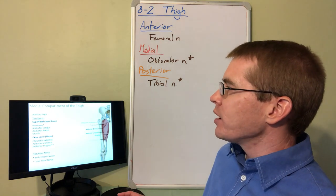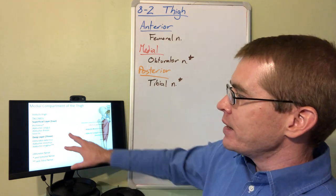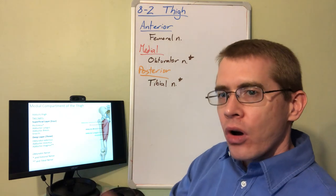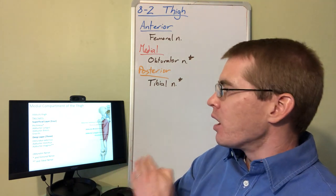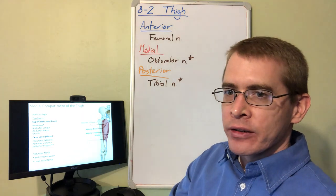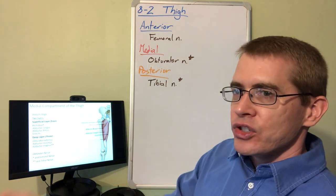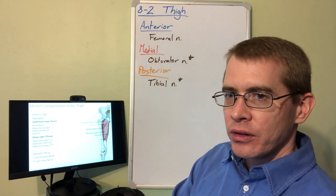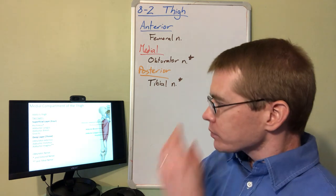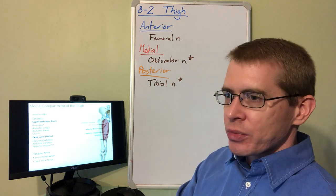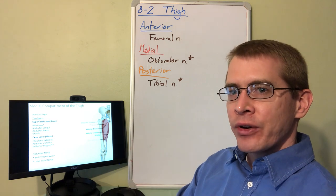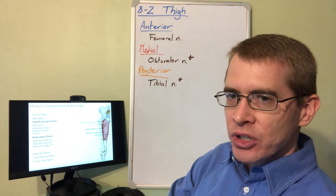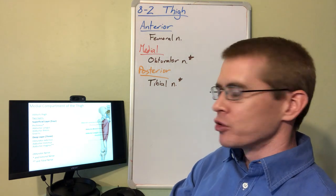Next we're going to talk about the medial compartment of the thigh, and I'm dividing that into two different layers for you, a superficial and a deep layer. All of the muscles in the medial compartment are innervated by obturator nerve. There are two cases where muscles are innervated by more than just obturator nerve. In the superficial layer, pectineus muscle is innervated by obturator nerve and femoral nerve.